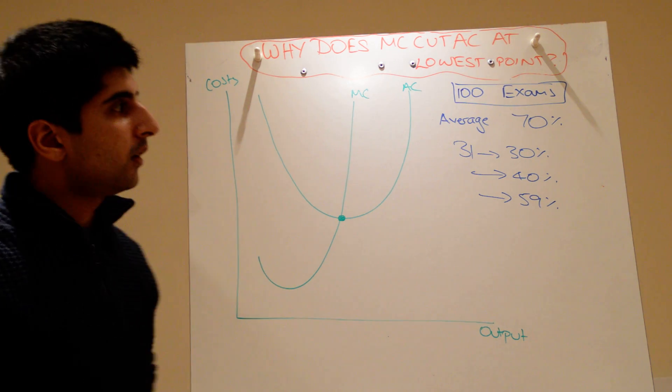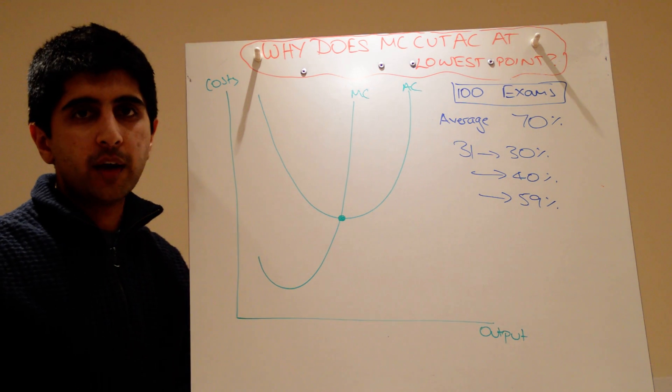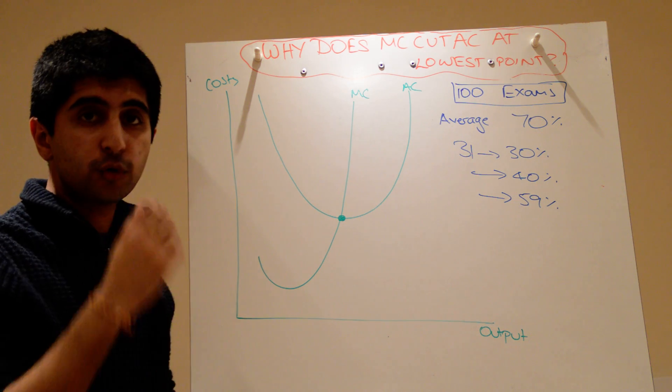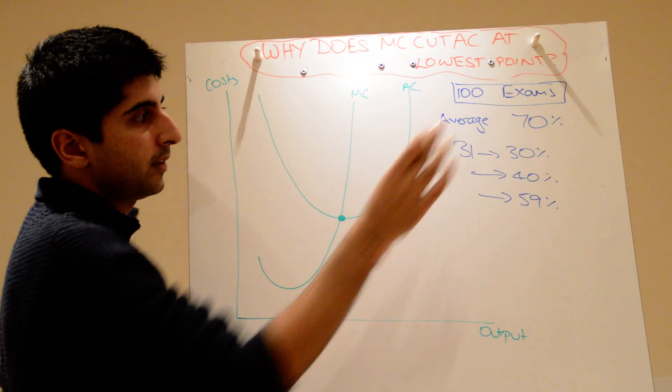Now, you're a student. Let's assume that you have sat 100 exam papers already and that your average score from those 100 exams is 70%. Well, let's now look at marginal and average effects.